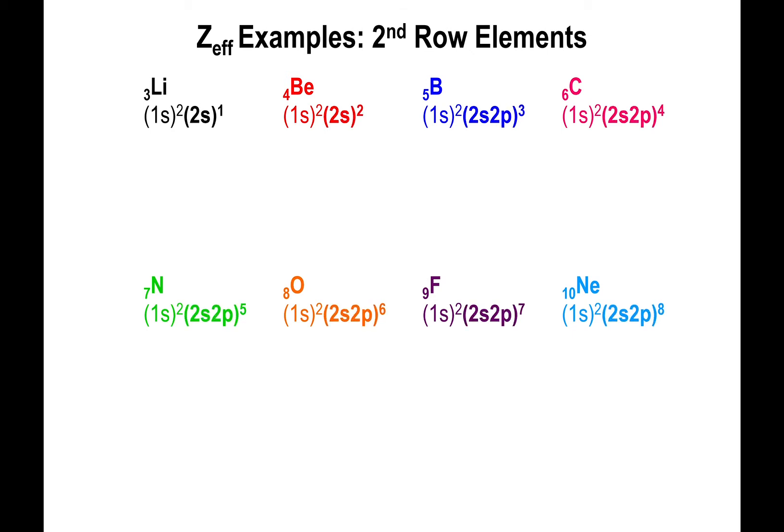We're going to concentrate on the valence electrons. From this point on, all the calculations we're going to be doing revolve around the valence electrons of the elements in question. The chemical properties are dictated by the valence electrons themselves. So we just focus on them, period. We're going to calculate the effective nuclear charge for the 2s2p group for every single one of these elements.